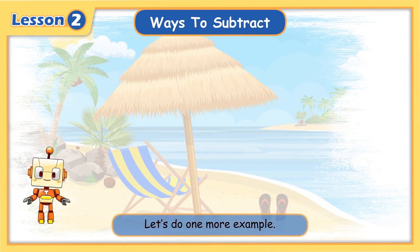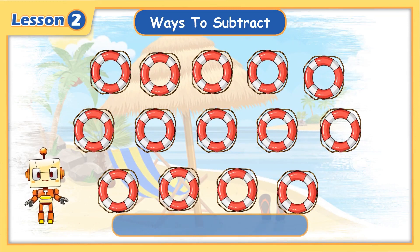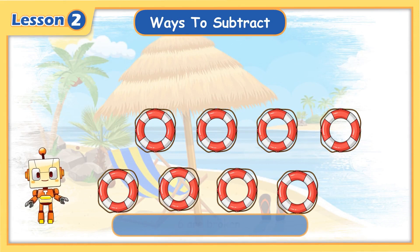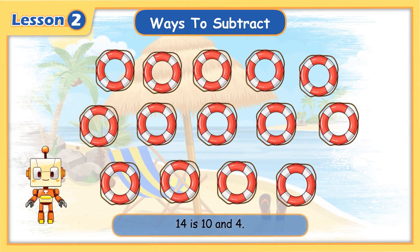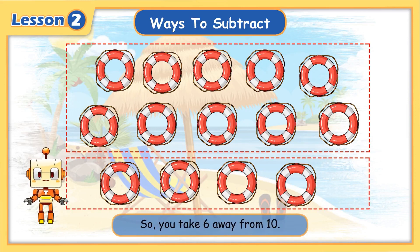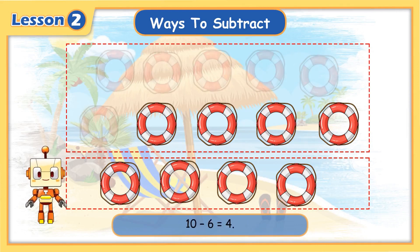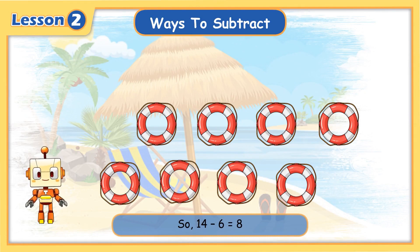Let's do one more example. There are 14 life buoys here — six are broken. How many life buoys are left? 14 is 10 and 4. You cannot take 6 from 4, so you take 6 away from 10. 10 minus 6 equals 4, and 4 plus 4 equals 8. So 14 minus 6 equals 8.